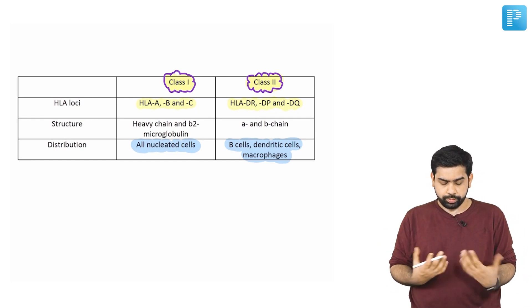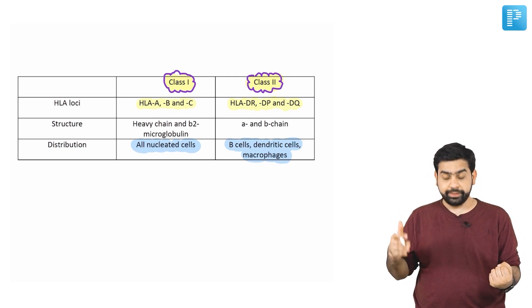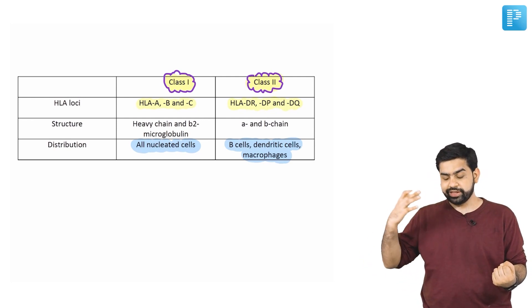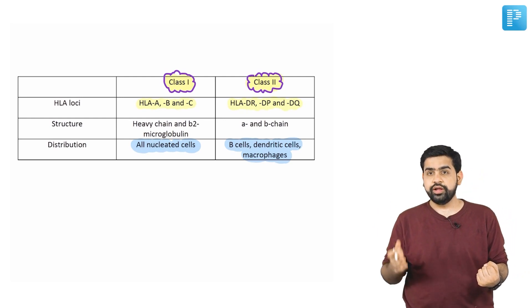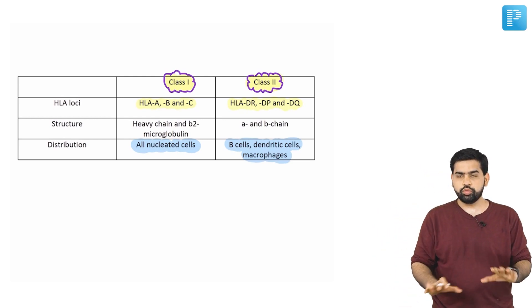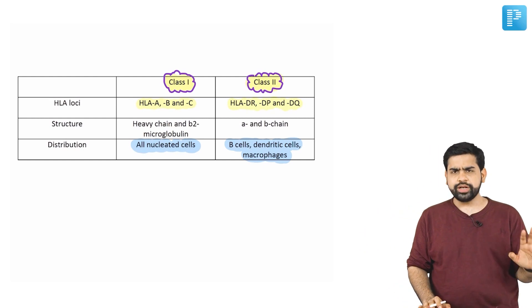Regarding structure: HLA Class I has a heavy chain and beta-2 microglobulin. HLA Class II has an alpha chain and a beta chain. The structure is less critical to remember — focus more on where each class is situated.